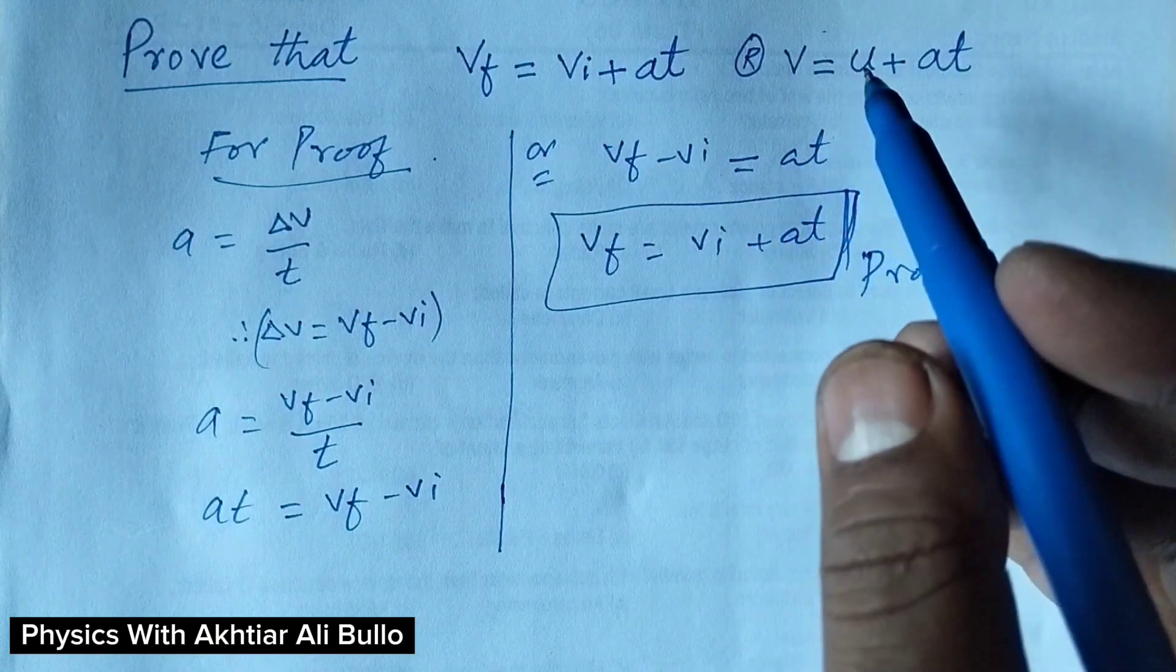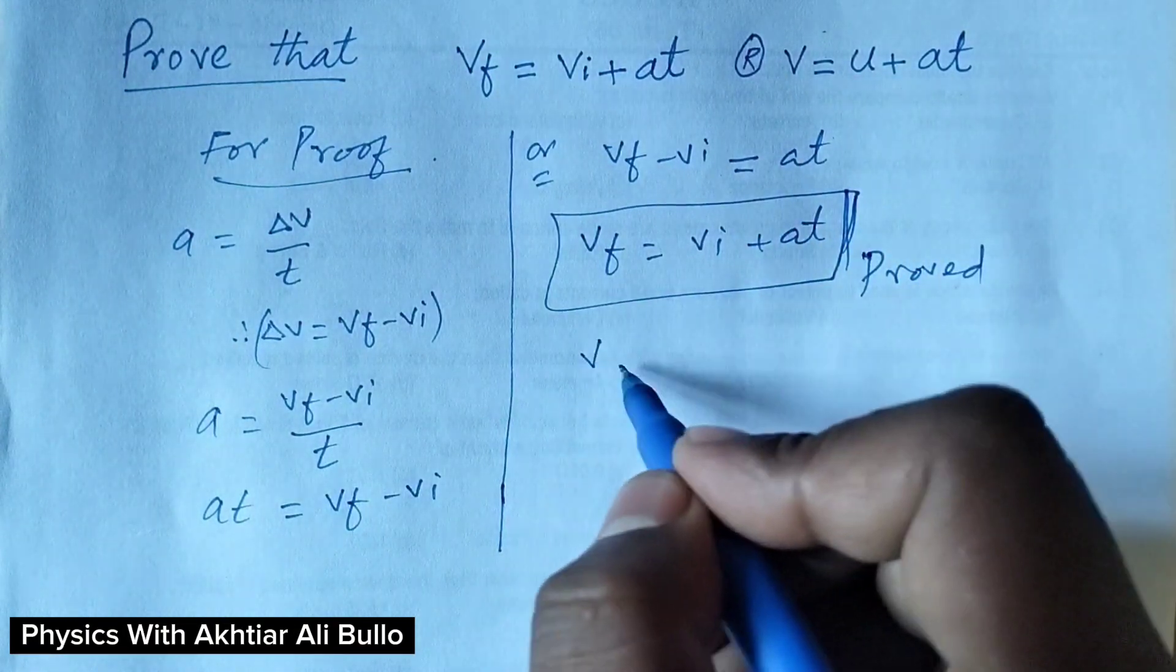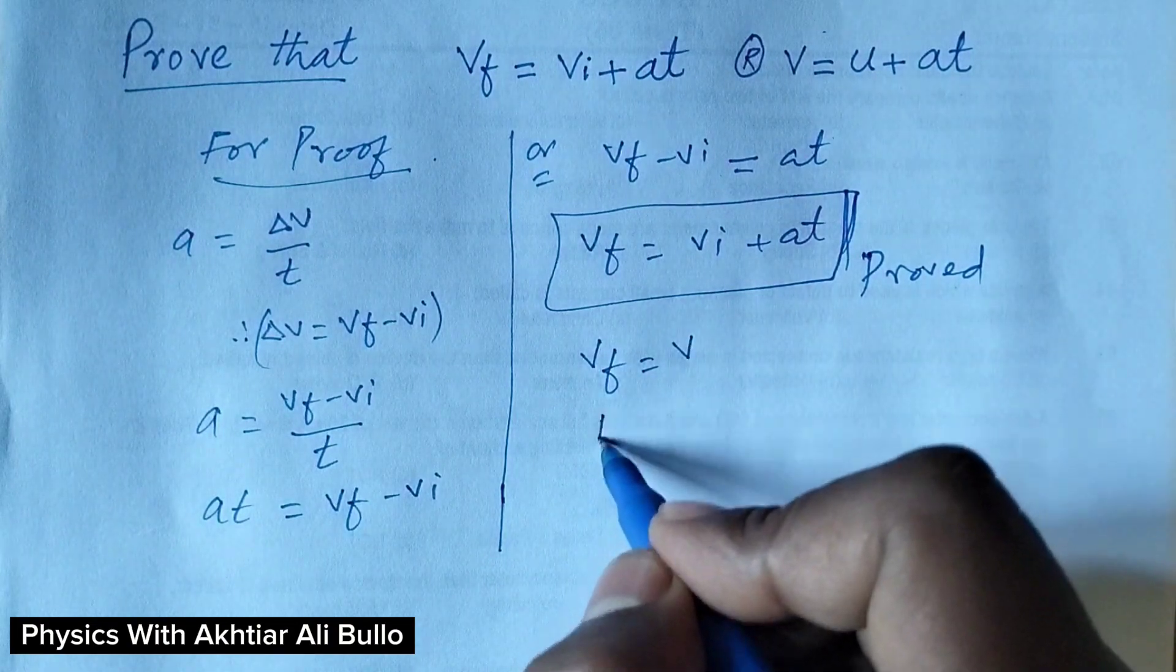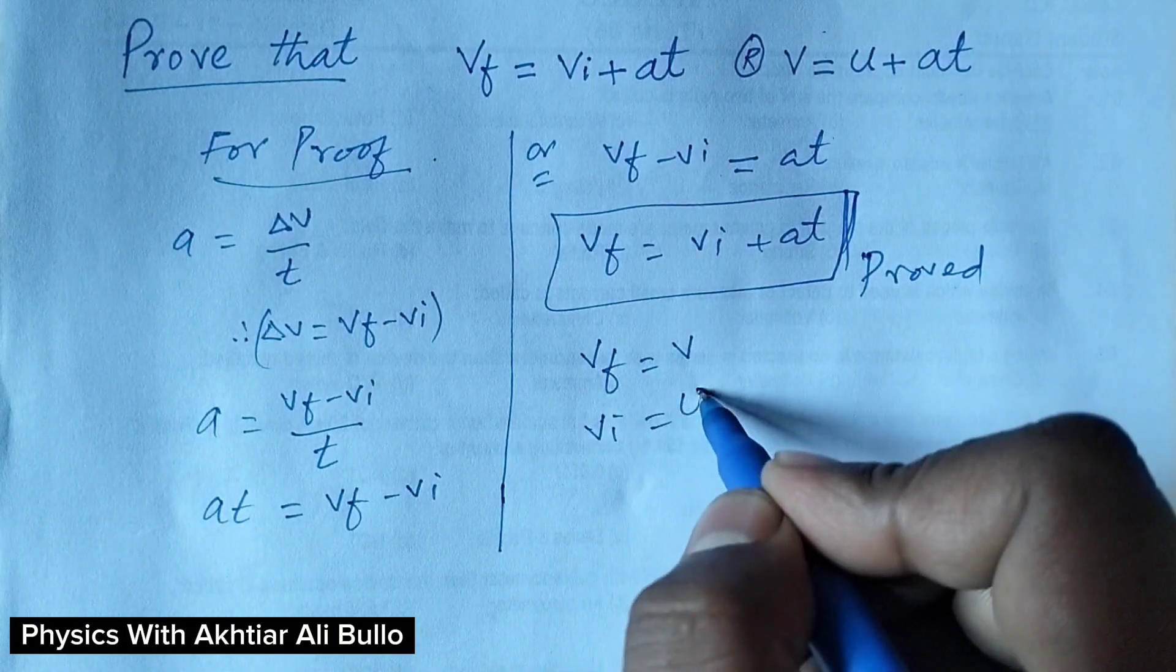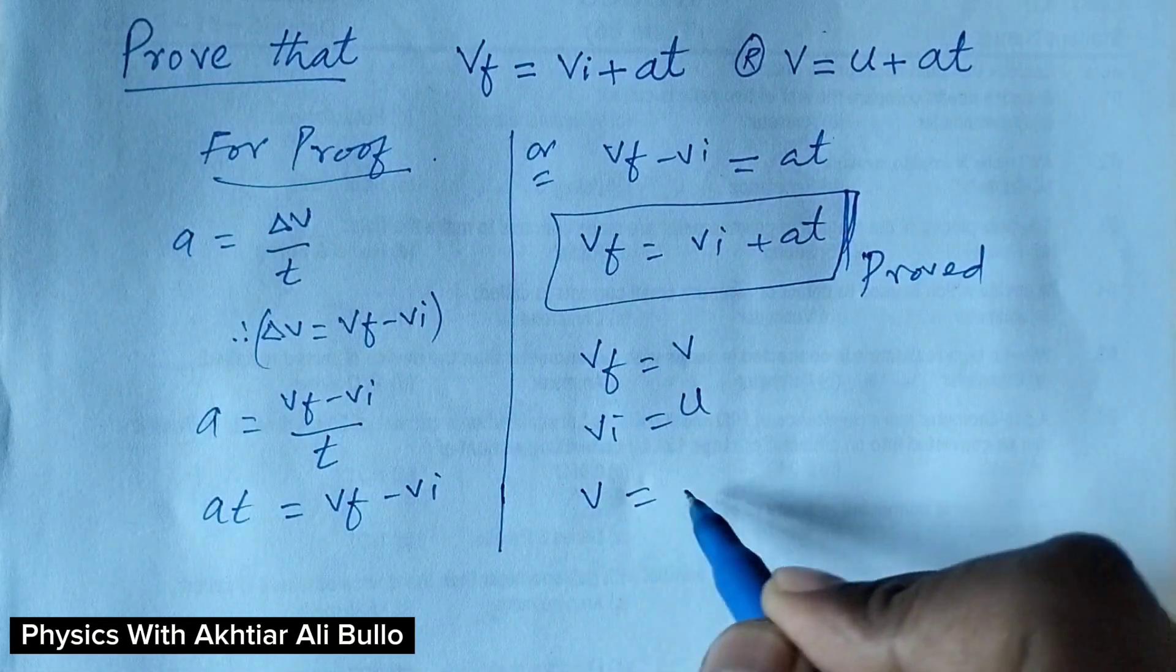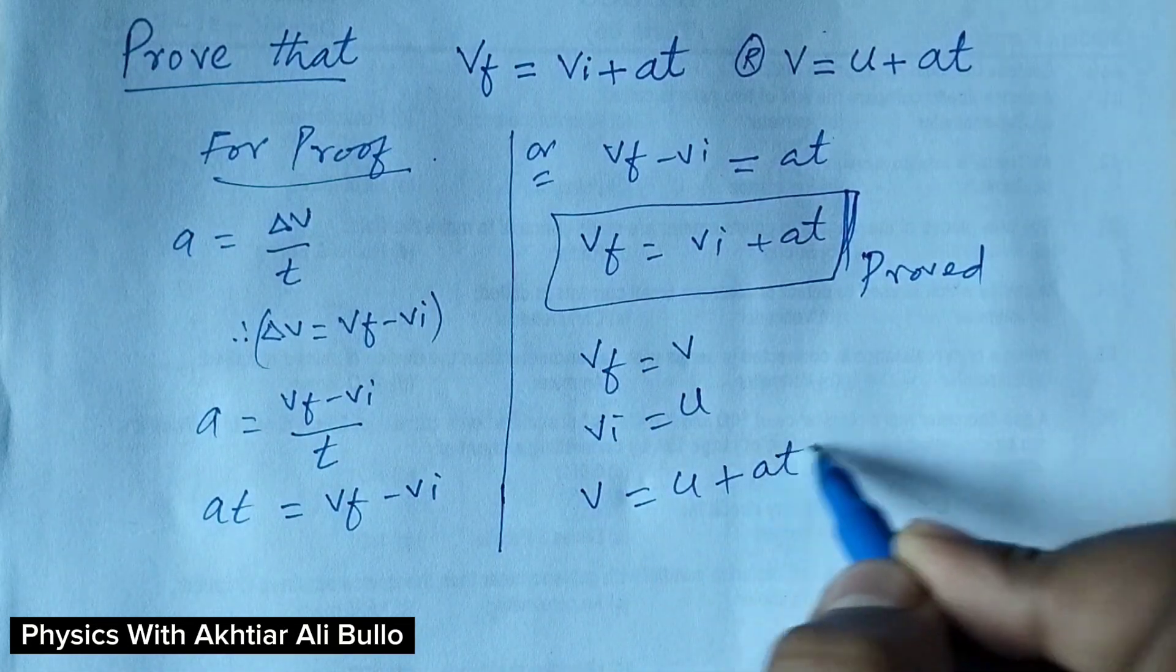In some other books, VF is taken as V and VI is taken as U. So we can also write this equation as V is equal to U plus AT.